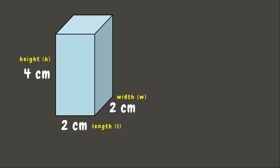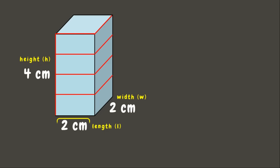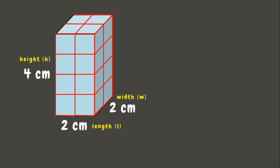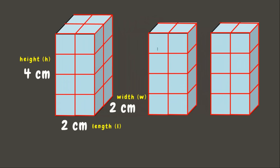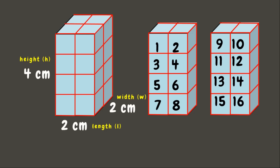Now let's go back to our problem and make some cubic units using the dimensions of this figure. The rectangular prism has a height of four centimeters, so that will be one, two, three, and four. For its length it has two centimeters, so that will be one, two. And for its width it also has two centimeters, so that will be one and two.